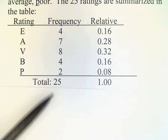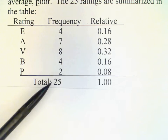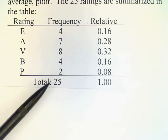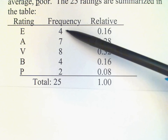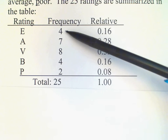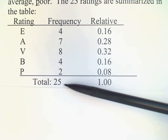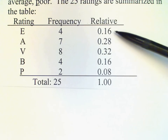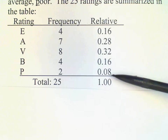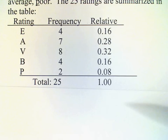At the bottom of the table the total is 25 — there are 25 people in the survey. To get the relative frequency, we take the frequency of each response — for E, for example, that's 4 — and divide it by the total. That gives us the fraction of the responses that were E: in this case 0.16, or 16 percent. We do that for each of the responses, and of course the totals must add up to 100 percent.